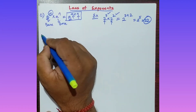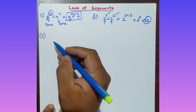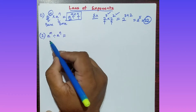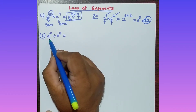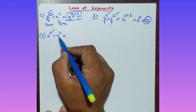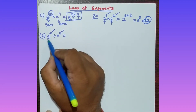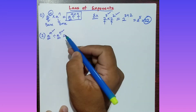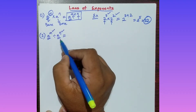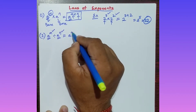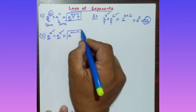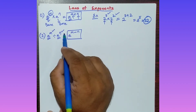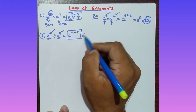The second property: a to the power m divided by a to the power n. Here, a is the base, and m and n are the powers. The bases are the same, but you are dividing and the powers are different. In this case, the formula to apply is: a to the power m minus n.